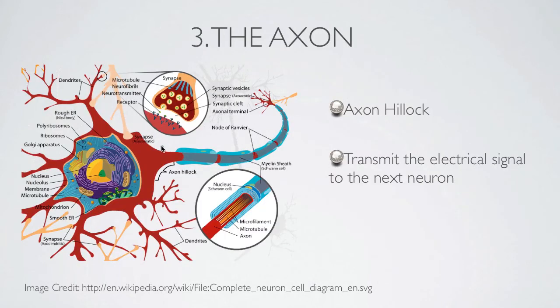The site of connection, right here, between the soma and the axon, is called the axon hillock. The role of the axon hillock is to integrate all the incoming electrical signals into one signal. That new signal will travel on the axon all the way down to the synaptic terminal.